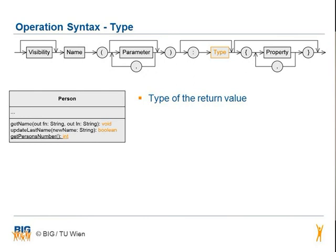Once you have defined the optional parameters correctly and closed the brackets, you can optionally specify the return type of the operation with a colon in front of it. The last optional building block is again the property, which is of the same syntax as the property of the attribute.